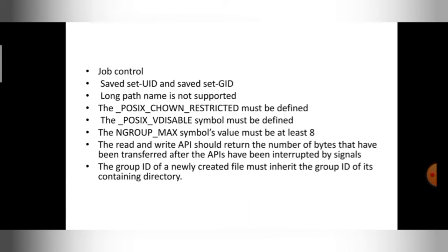Next, the read and write APIs should return the number of bytes that have been transferred after the APIs have been interrupted by signals. If you are using a FIPS standard and you are doing any read or write operation using an API, when that operation is stopped, it should display how many bytes were written or read. That message must be displayed.